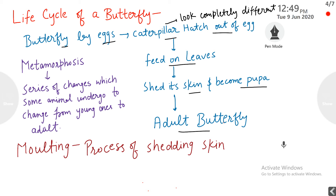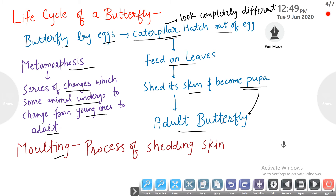Now we need to understand one term: metamorphosis. Metamorphosis is a series of changes that some animals undergo to change from young ones to adults. Also, molting is the process of shedding skin.